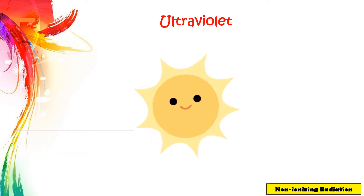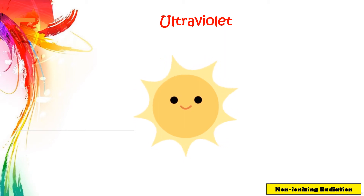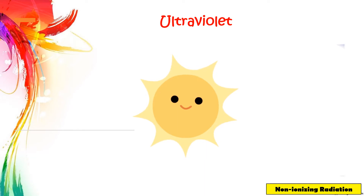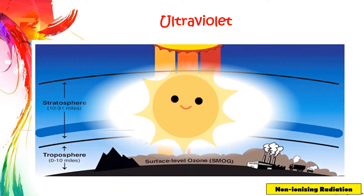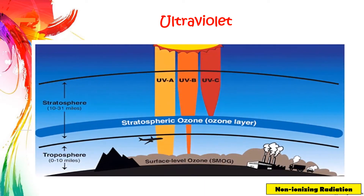Ultraviolet radiation comes from the sun. There are three types of ultraviolet rays: UVA, UVB, and UVC. UVC is absorbed by the ozone layer and really never reaches the Earth.